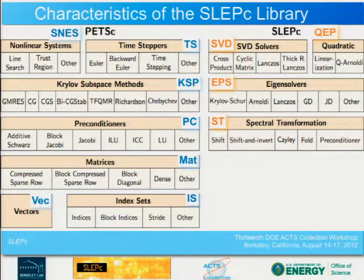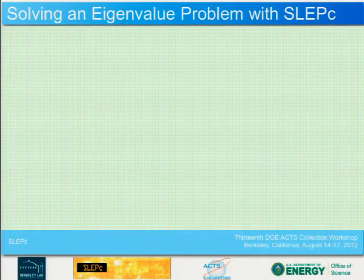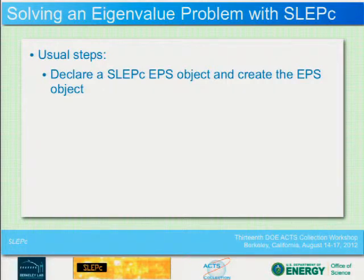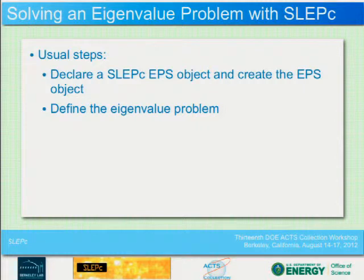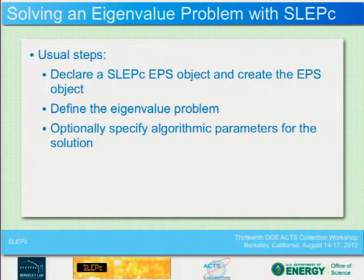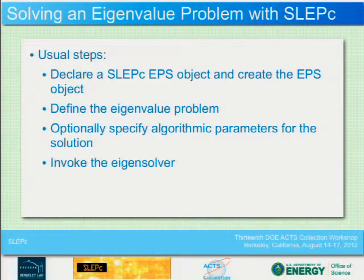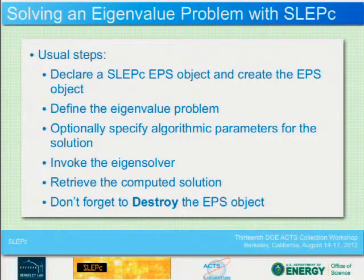How do we solve an eigenvalue problem with SLEPC? The usual steps are: declare and create an EPS object; define the eigenvalue problem; set options for solver type and parameters such as largest/smallest eigenvalue or full spectrum; call the eigensolver; retrieve the computed information; and destroy the object. Remember to always destroy objects because temporary storage doesn't go away until you do — it will only be freed when you destroy the objects.